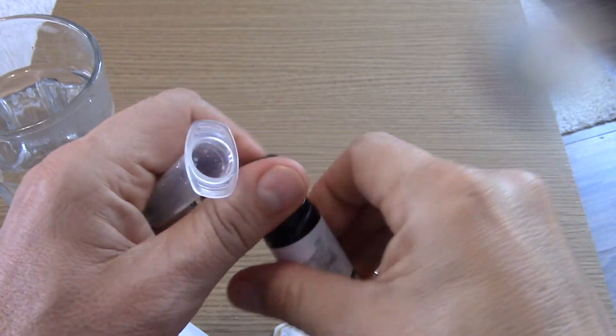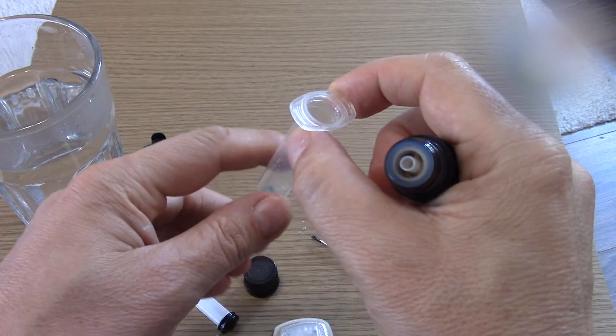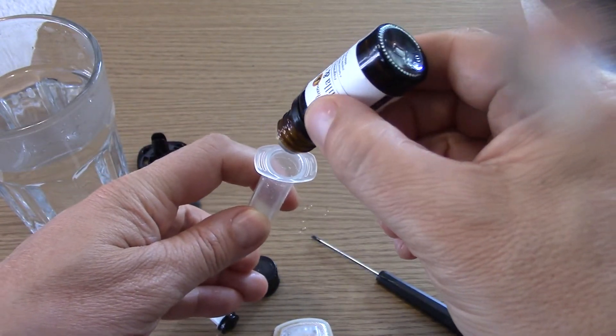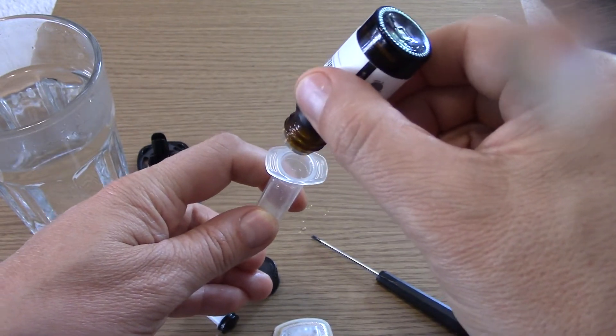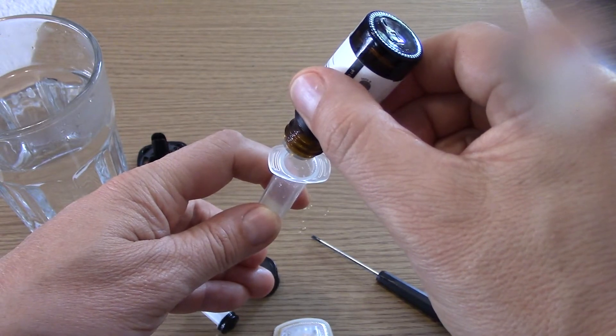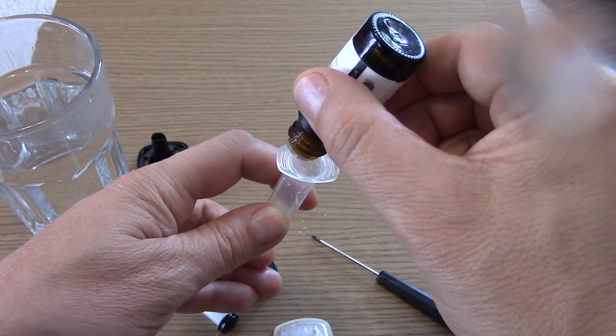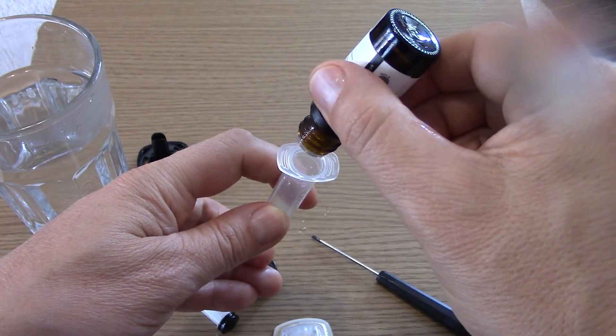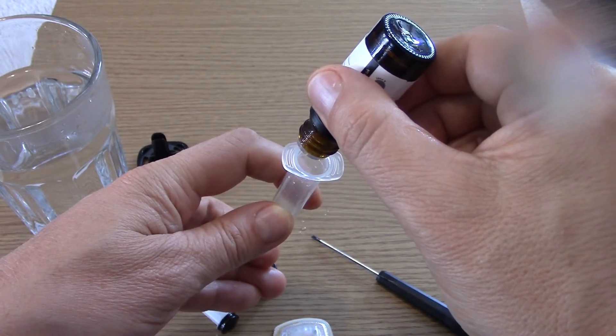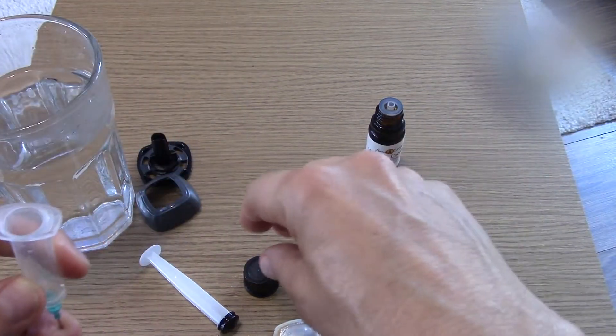Empty syringe. Going to need to put my finger over the end so it doesn't fall out. And then simply drip: one, two, three, four, five, six, seven, eight, nine, ten. As you can see, there's a small amount of fluid in there.